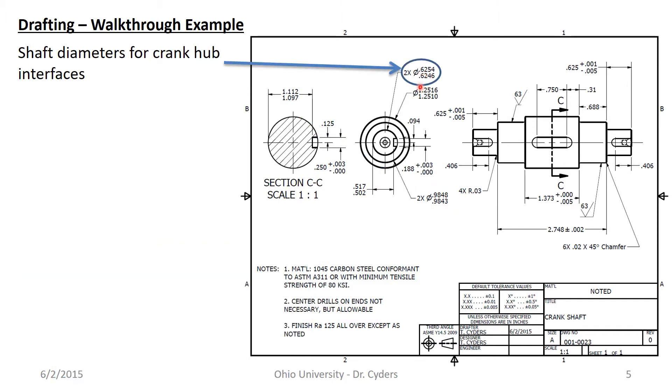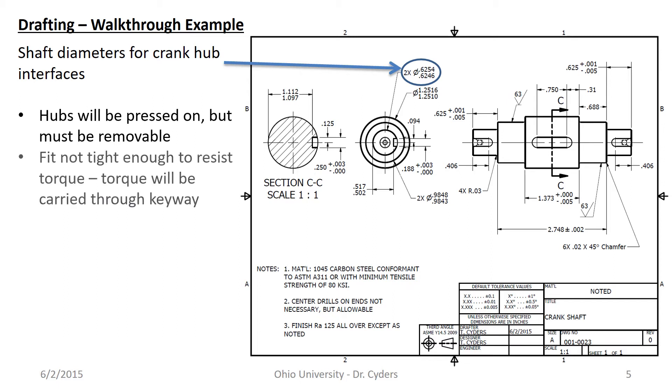The shaft diameters for the crank hub interfaces, these two ends actually have a little component that goes on them but it's not going to be like the sprocket or the bearings. They'll be pressed on but I need them to be removable so I don't want it to be a permanent joint. I want the fit to be loose enough that it doesn't resist torque. I want torque to be resisted by the keyway again so I can align the keyways I'm pressing it on and the hub has set screws to maintain tightness so I don't need a whole lot of interference here.